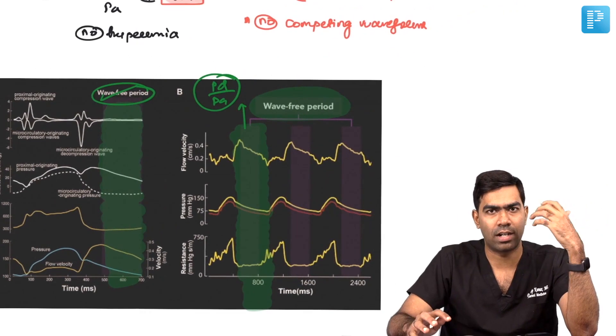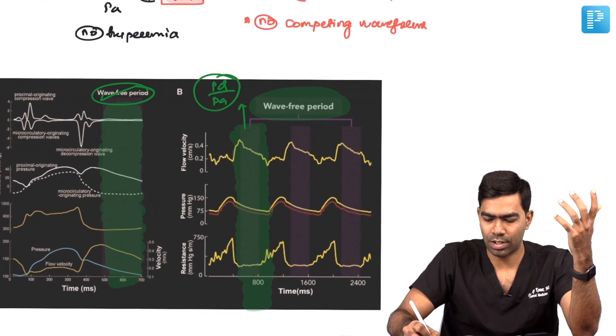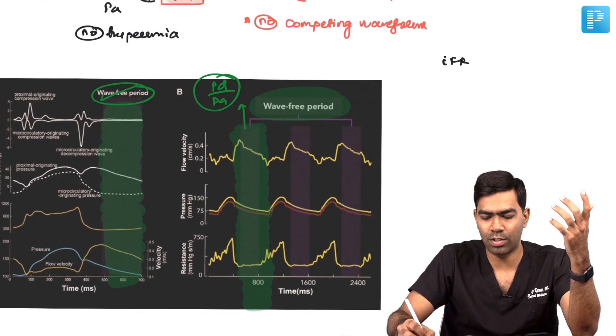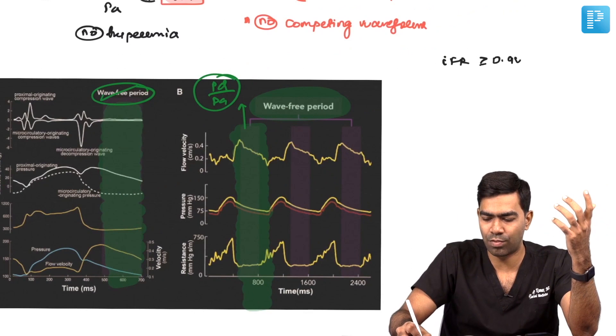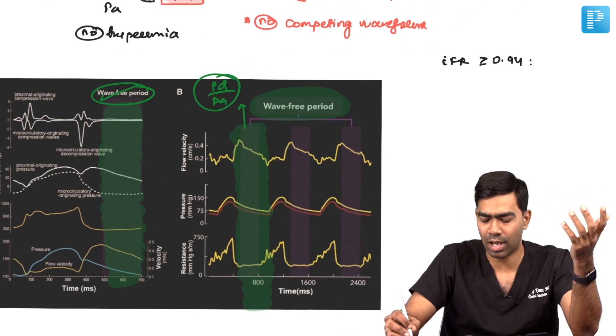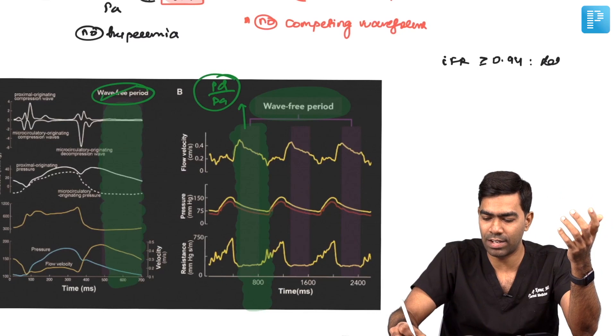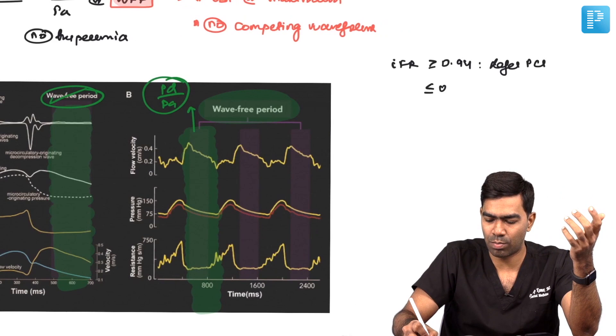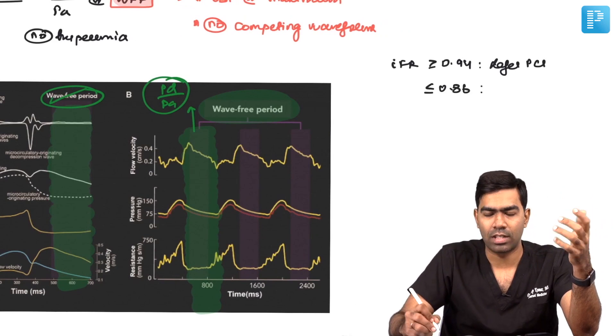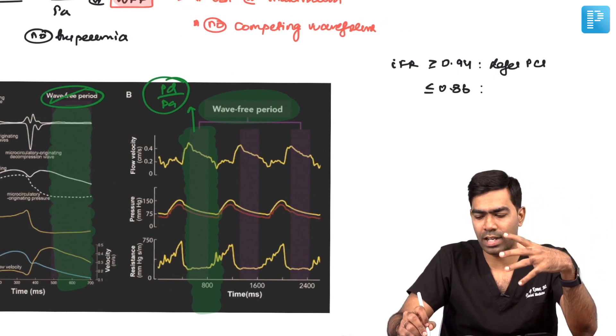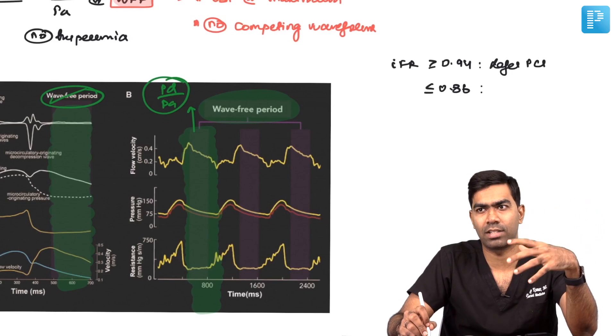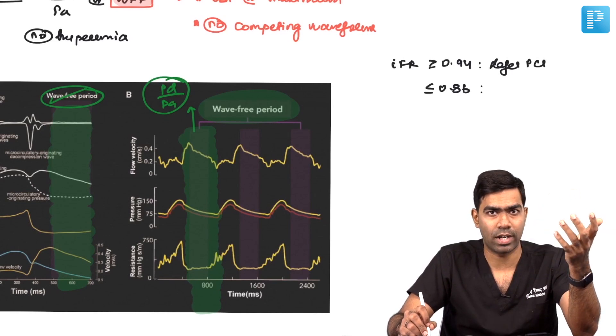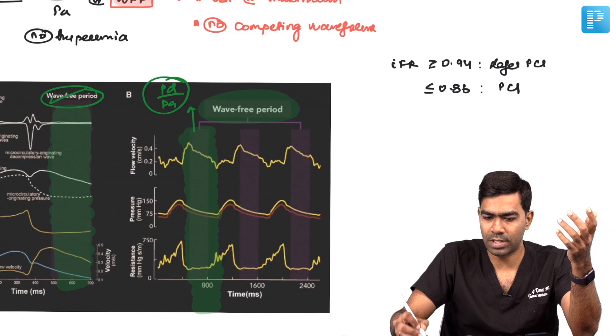Are there cutoffs for instantaneous wave free ratio? Yes. IFR values greater than 0.94 are not significant and you can defer PCI. IFR values less than or equal to 0.86 are hemodynamically very significant—you can take IFR less than 0.86 as FFR less than 0.80, and you have to do PCI.